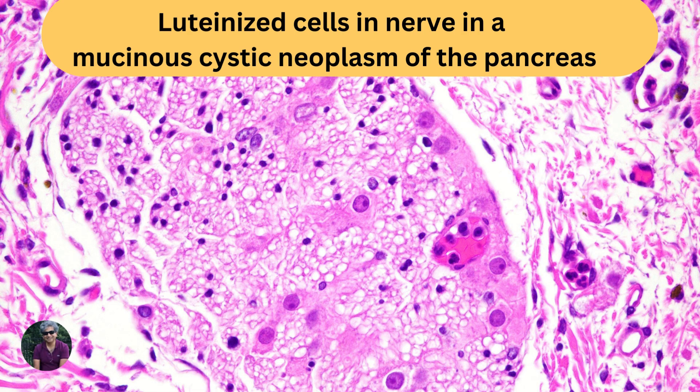And finally, I think this is the coolest mimic of perineural invasion. Notice these epithelioid eosinophilic cells. This is from a mucinous cystic neoplasm, and these are luteinized cells from that mucinous cystic neoplasm trapped within the nerve. This is something RGY and colleagues see far more often. This is not malignant — this is a mimic of perineural invasion.